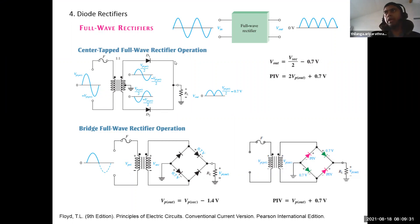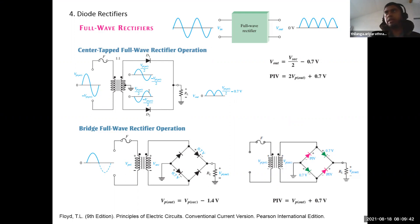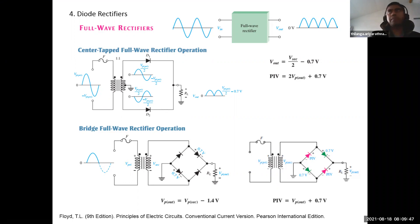We have two diodes, then we connect them. So this is the output waveform that you see. Now you can see each time we have two diodes applying on this current flow.